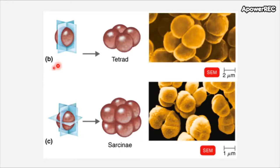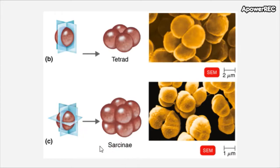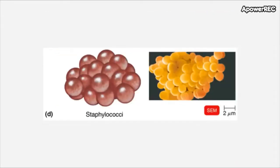If a bacterium divides on two different planes, as in image B, it becomes a tetrad, meaning there are four bacterial cells that can remain as a group. If a bacterium divides on three different planes, we can have a sarcina if the bacterium remains as a group in which we have eight bacteria attached to each other. Lastly, if we have a bacterium that divides all over the place, we can have clusters — these clusters form staphylococci, called 'staphylo' because they resemble bunches of grapes.